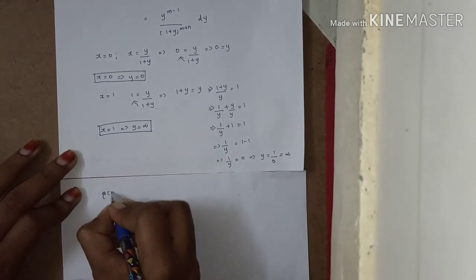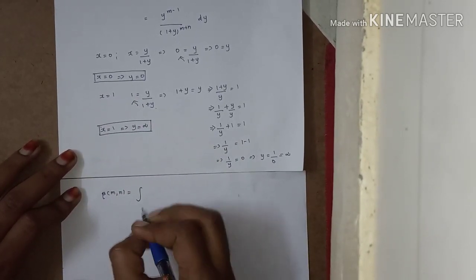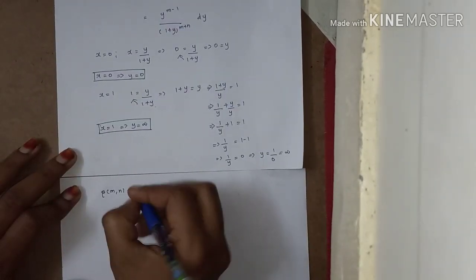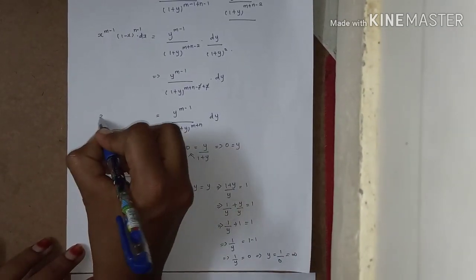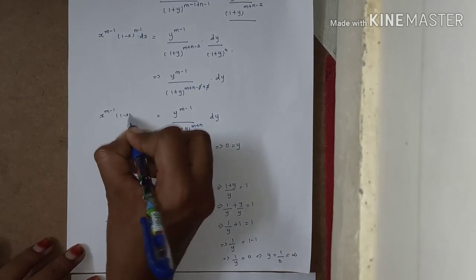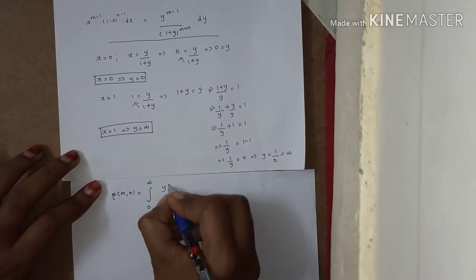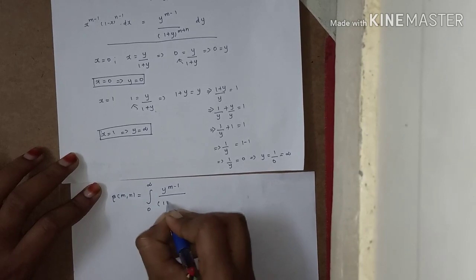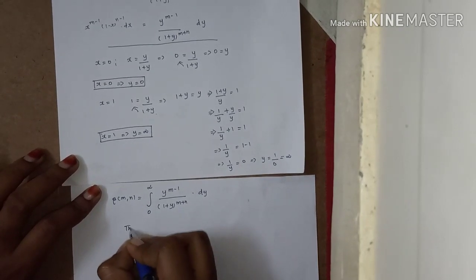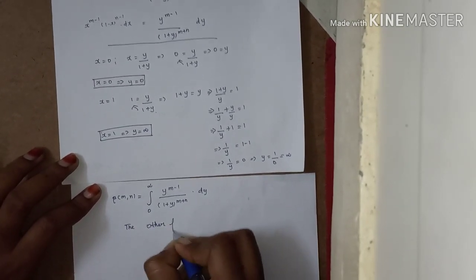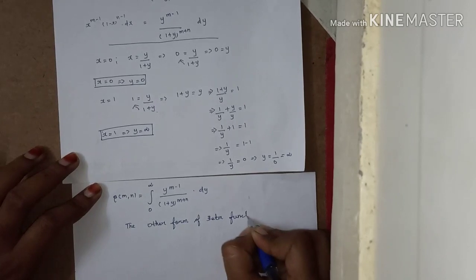Applying the beta function with the new limits, beta(m, n) equals the integral from 0 to infinity of y power m minus 1 divided by 1 plus y to the power m plus n, dy. This is the other form of the beta function — the alternative representation of the beta function.